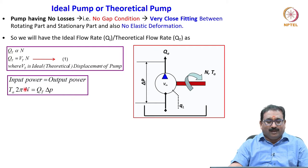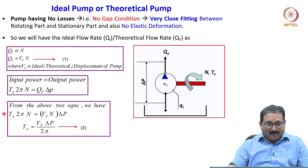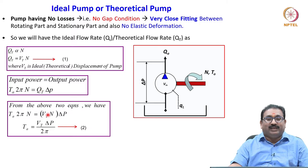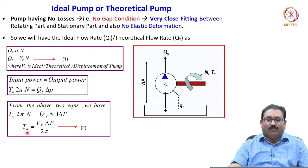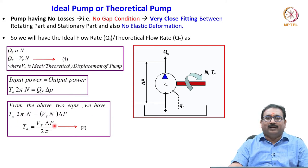Similarly, input power equals output power. Input power from the electric motor — TA into 2πN — equals QT into delta P. From these two equations, substituting QT as VT into N, we get the actual torque TA equal to VT into delta P divided by 2π. These are two very important equations for the ideal pump: QT = VT×N and TA = VT×ΔP / 2π.